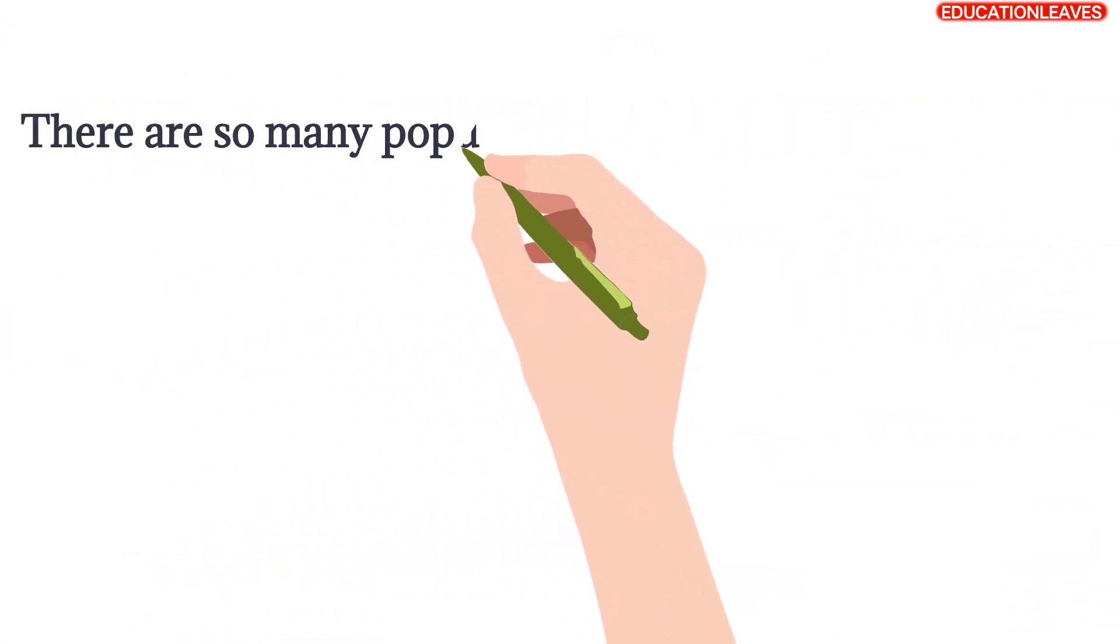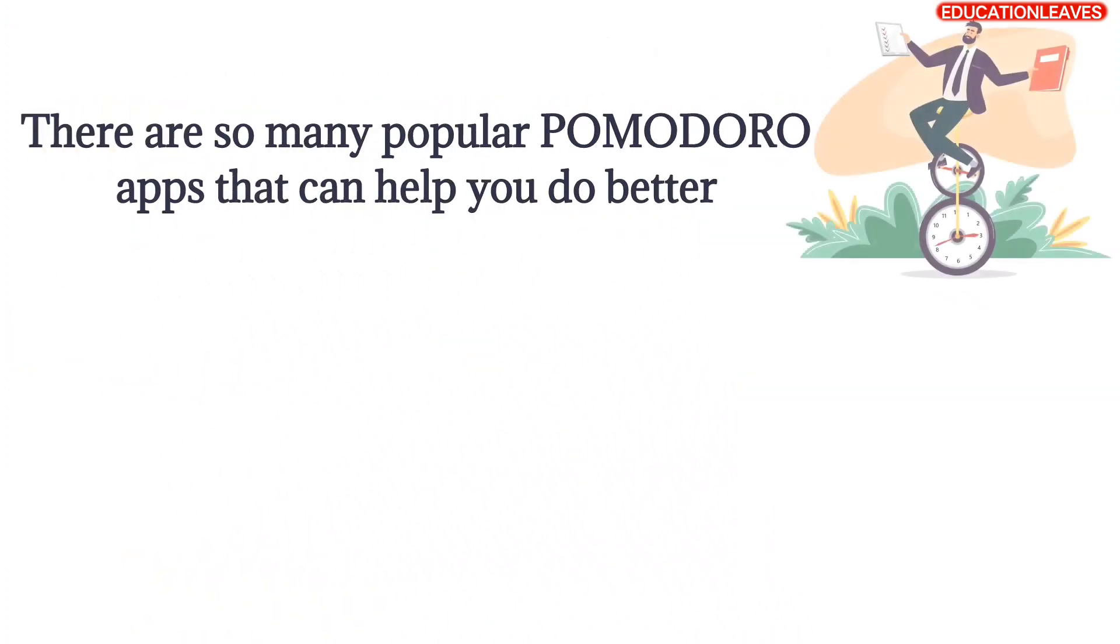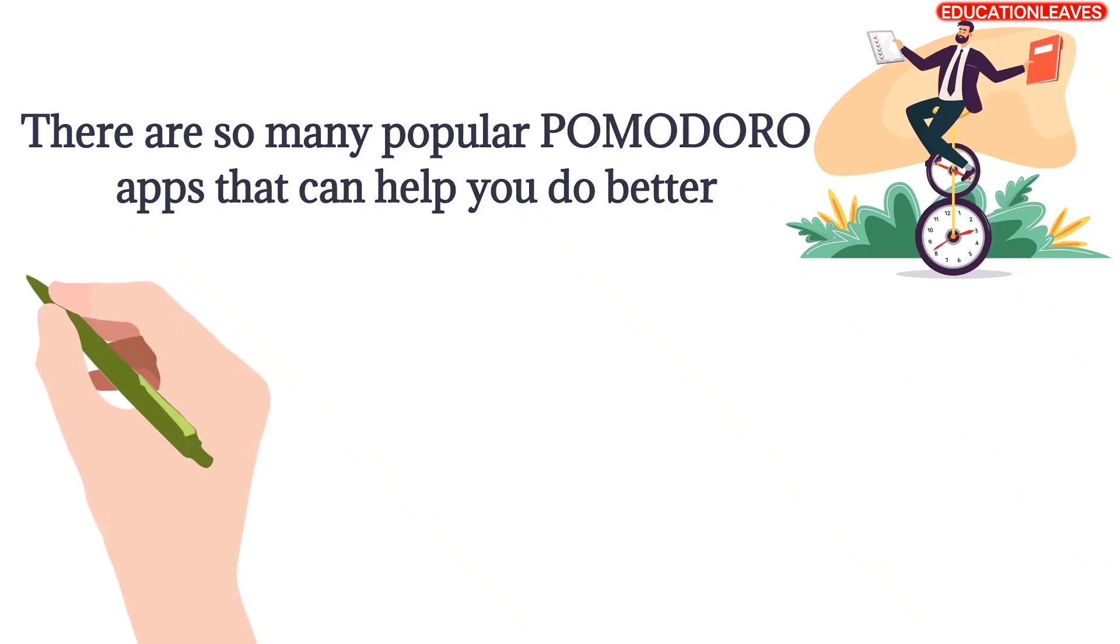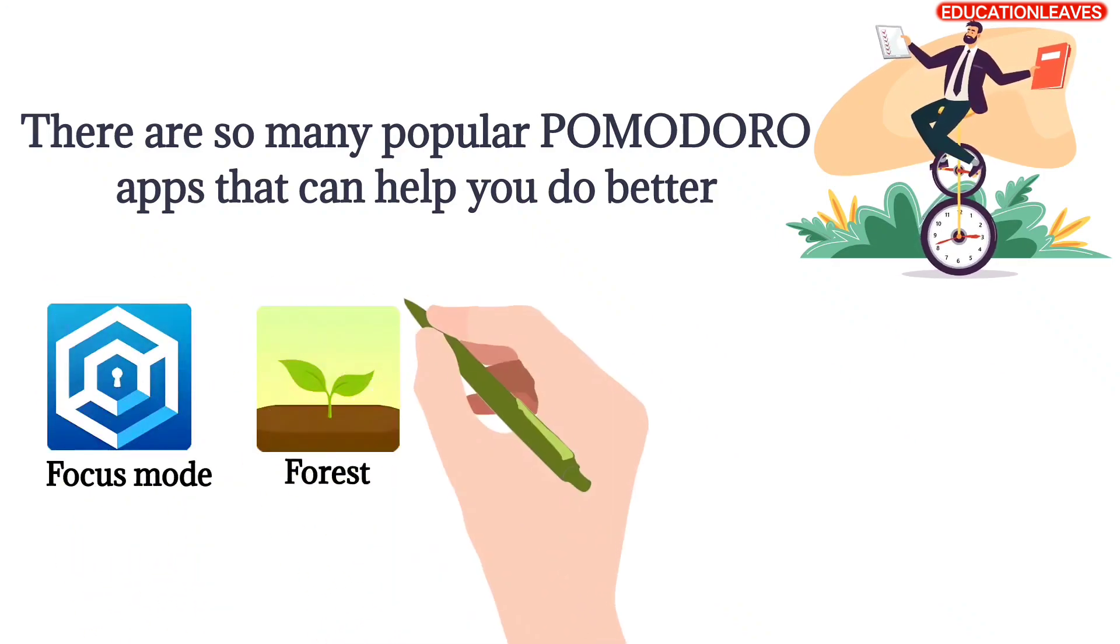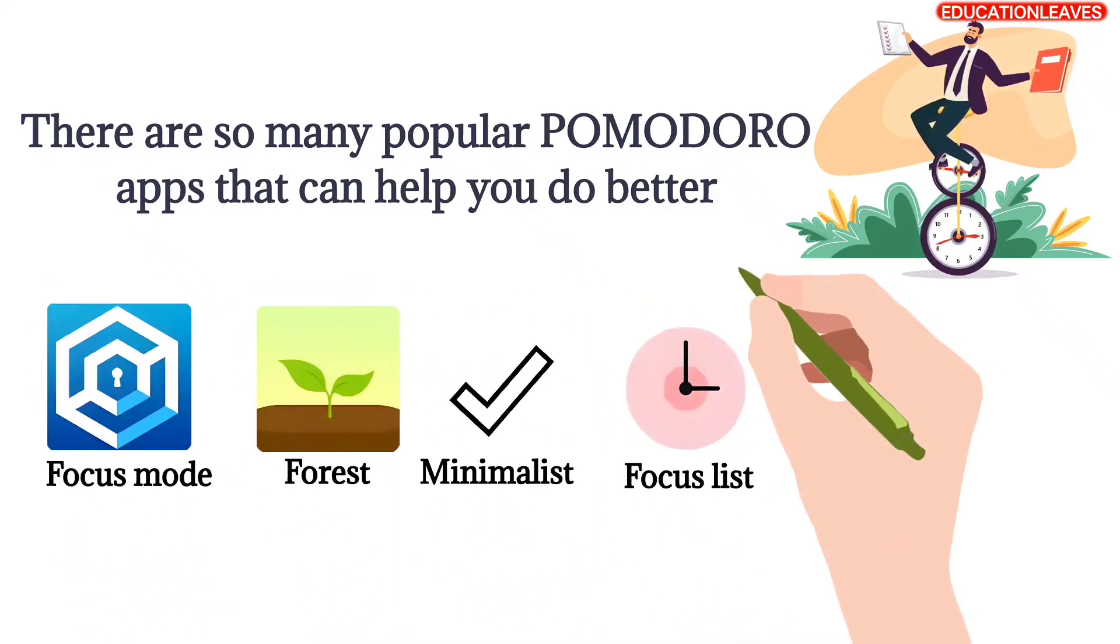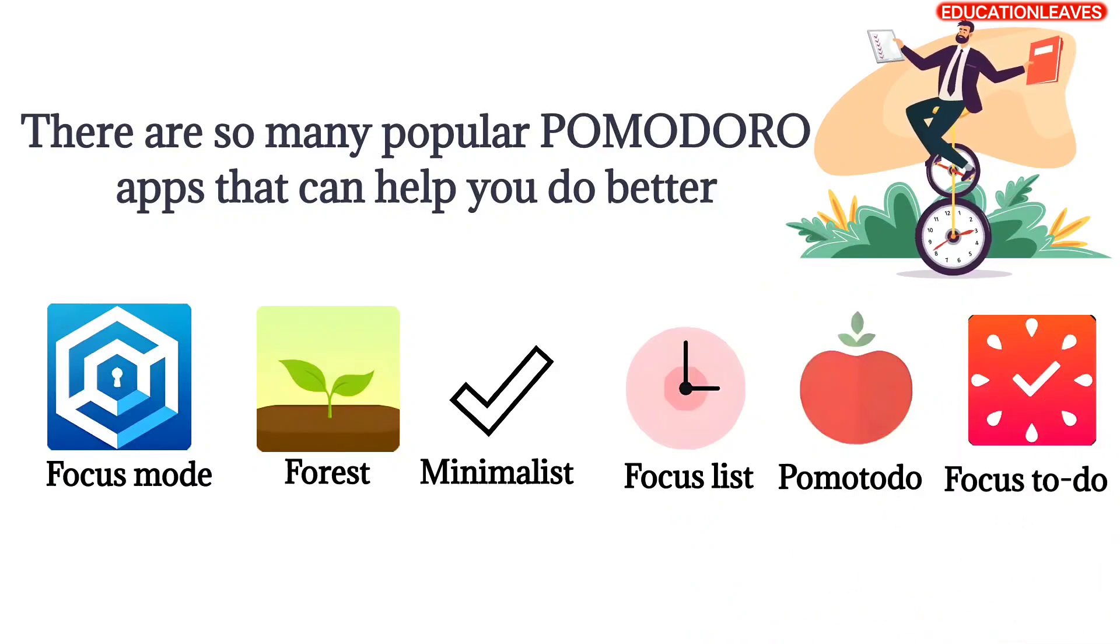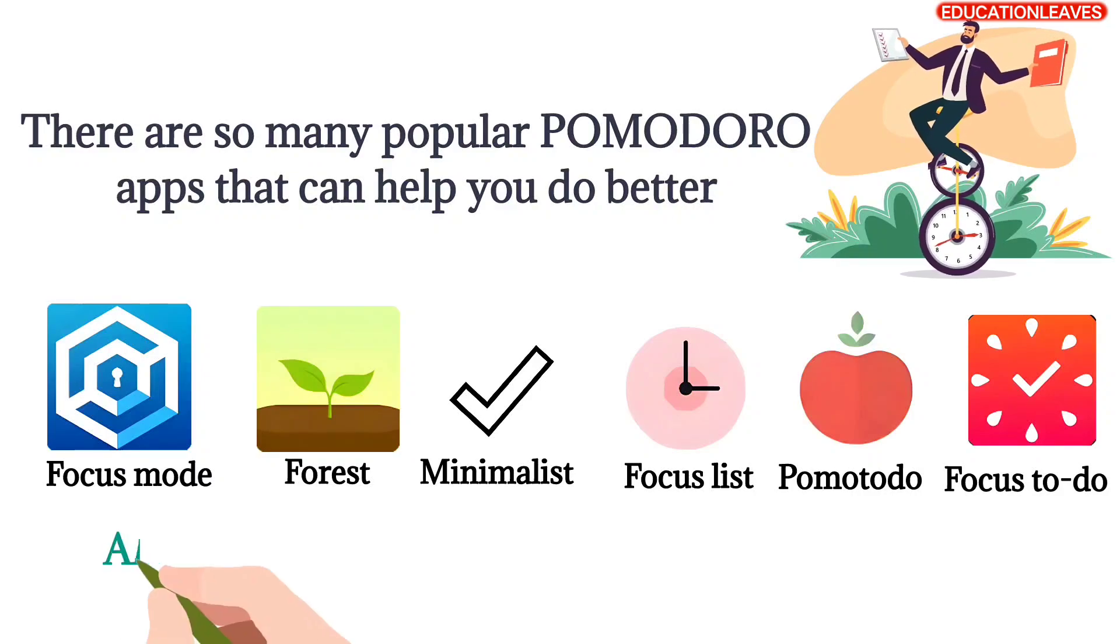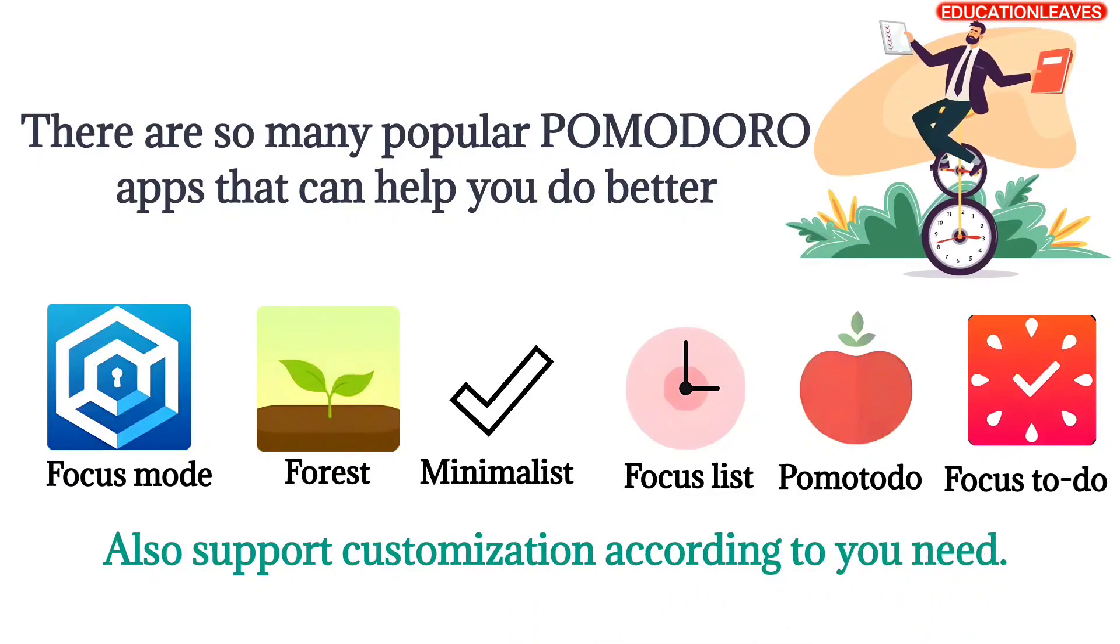There are so many popular Pomodoro apps that can help you do better time management. Focus Mode, Forest, Minimalist, Focus List, Pomotodo, and Focus To Do are some of them. These apps give you a digital way to track 25 minutes, followed by a 5-minute break, and also support customization according to your need.